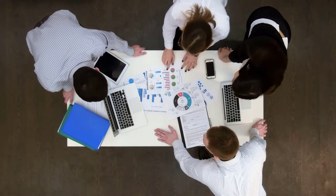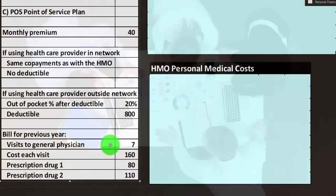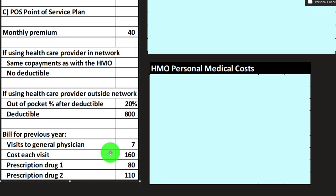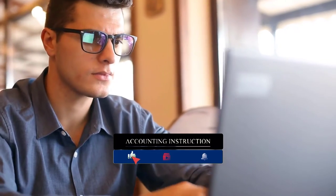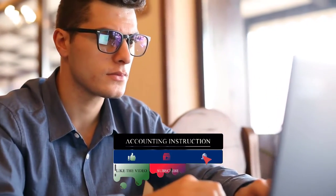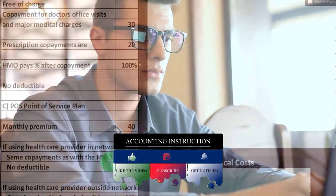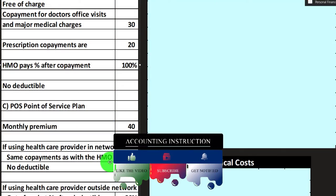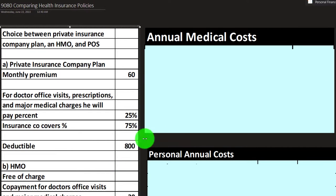We're going to imagine we have prior data on medical costs. Visits to the general physician were seven in prior years at a cost of $160 each. We also have two prescription drugs — one at $80 and one at $110. Using that data, we'll project future costs. Note again that this is only one consideration, since there are differences in flexibility between these plans in terms of which doctors you can see and in-network versus out-of-network considerations.